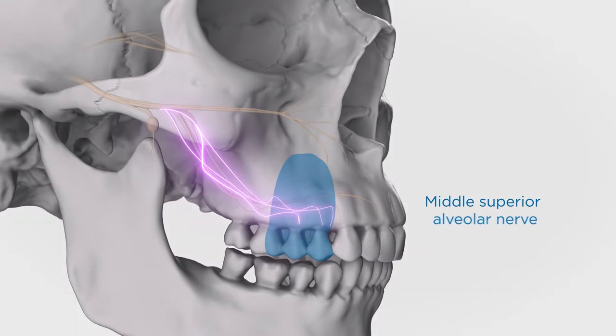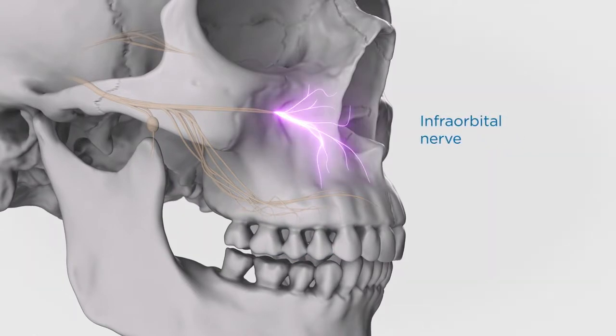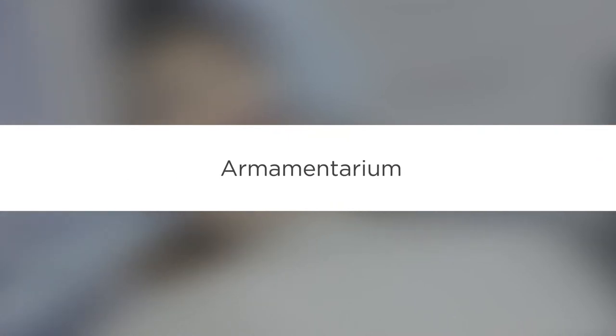The infraorbital nerve emerges from the infraorbital foramen to divide into its terminal branches.